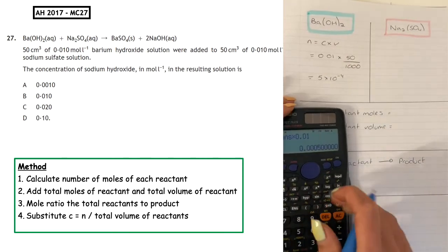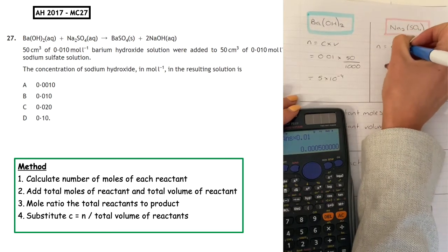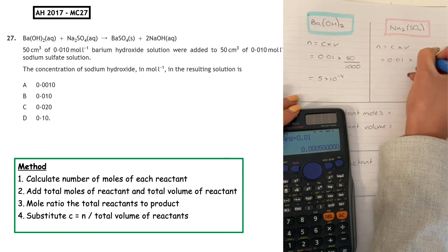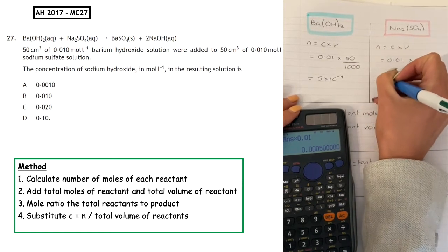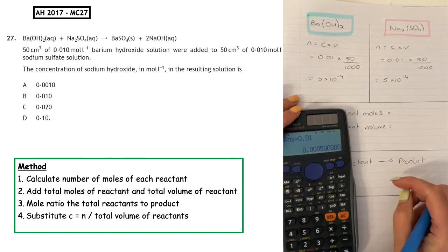The information they're giving us about the sodium sulfate: number of moles equals c times v. We've got the same concentration, the same volume, and therefore we will have the same number of moles.